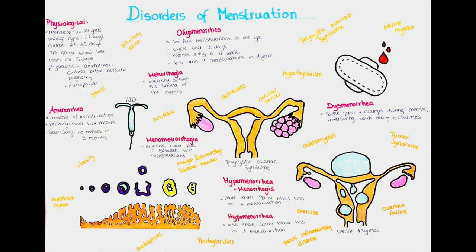The fallopian tube has a simple columnar ciliated epithelium to propel the ovum towards the uterus. The menstrual cycle begins with the first day of menstruation and lasts until the last day before the next menses occurs. 28 days is considered standard, but 21 to 35 days is physiological. The length of the follicular phase is respectively shorter or longer. The average blood loss in one menstruation is around 30 to 40 milliliters, roughly 2 tablespoons, and the normal duration of menstruation is around 5 days.